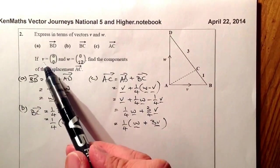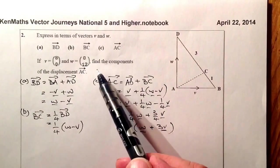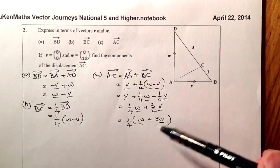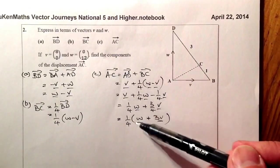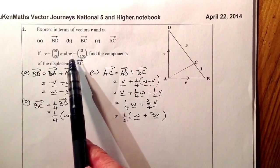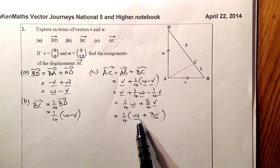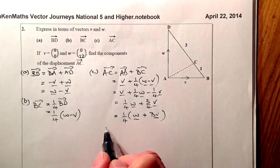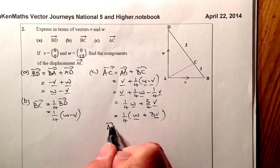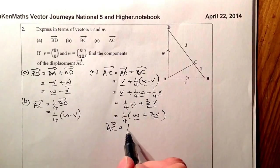If the vector V is equal to 8, 0, and W is equal to 0, 12, find the components of the displacement A to C. Now, we've already worked out the vector AC here, so let's go ahead and substitute these parts in here. So the column vectors for V and W, just into here. Right, so let's try and work that one out then. So for AC, what we've got is, we've got, let's substitute these in. So a quarter, W,